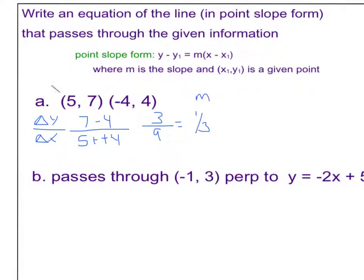And I can use either of these points. I'm going to choose that one, the first one, 5, 7. So y minus 7 equals 1 third times x minus 5. And I'm done. This is my answer. This is where I'm going to stop unless it specifies that you need to write it in slope-intercept form.